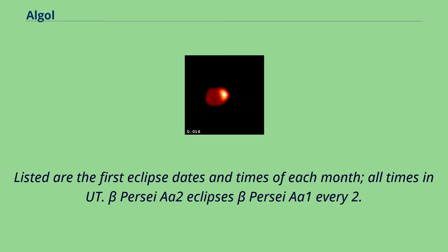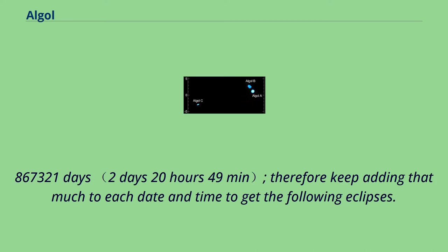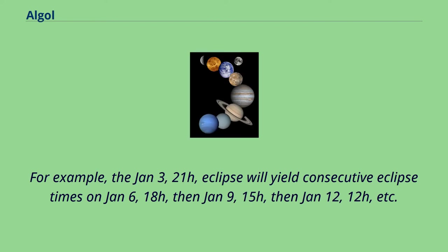Listed are the first eclipse dates and times of each month, all times in UT. Beta Persei A2 eclipses Beta Persei A1 every 2.867321 days, therefore keep adding that much to each date and time to get the following eclipses. For example, the January 3, 21 hours eclipse will yield consecutive eclipse times on January 6, 18 hours, then January 9, 15 hours, then January 12, 12 hours, etc.